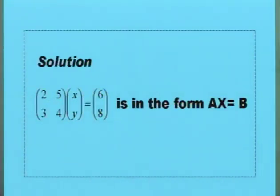Here's the solution. We take the coefficients of x and y to set up the first matrix, which gives us (2, 5, 3, 4). The matrix containing the variables (x, y) equals the matrix containing the constant terms (6, 8). This is in the form AX = B.